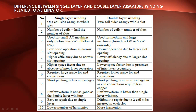Third difference: single layer winding is used for small AC machines only, that is below 2 kilowatts. Double layer winding is used for medium and large machines, above 5 kilowatts. Fourth difference: single layer has low noise operation due to narrow slot opening, whereas double layer has noisier operation due to larger slot opening.